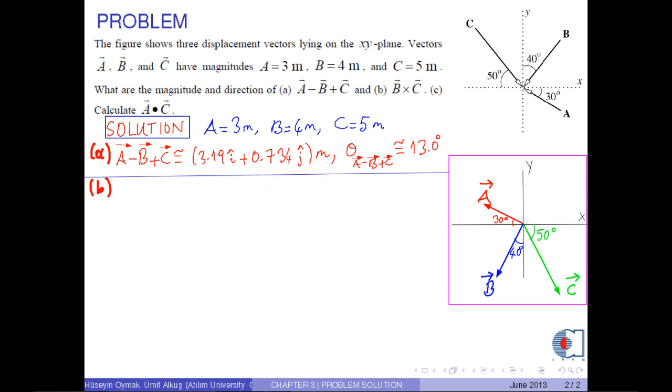In part b, the magnitude of B cross C is equal to B times C times sine 80 degrees. So if we insert the corresponding numerical values into this equation: 4 times 5 times sine 80 degrees.